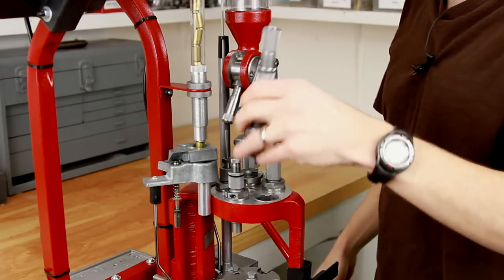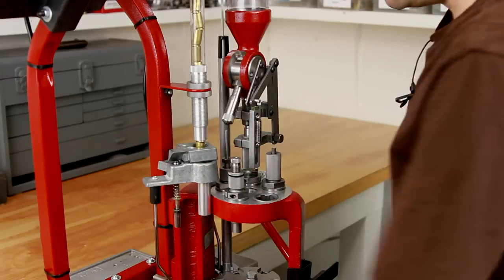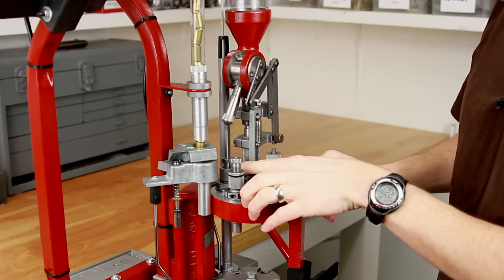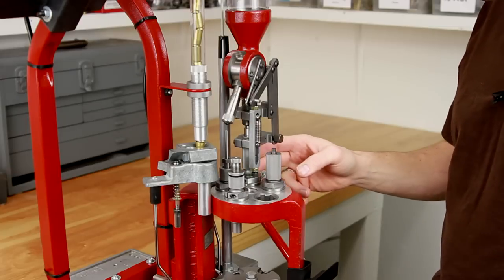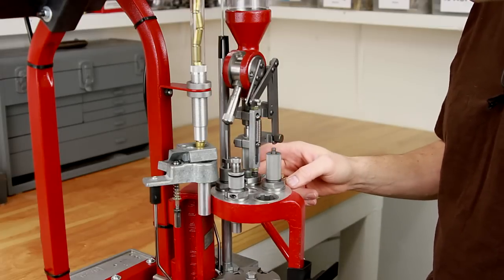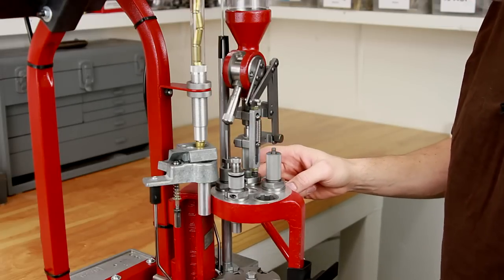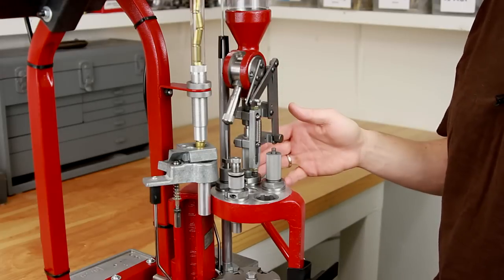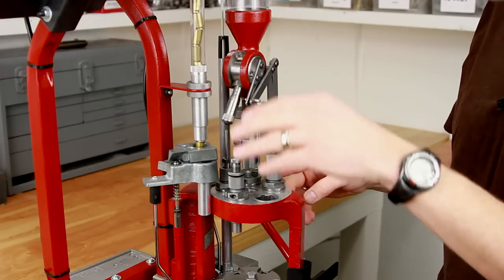I'm going to take the bullet feed die off and we'll quickly cover what dies we've got set up and which stations. We've got in station number one the sizing depriming die. In station number two we've got charging and expanding combo with the new improved redesigned PTX expanders that work great with the bullet feed system.